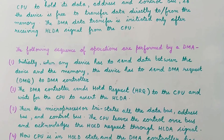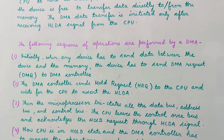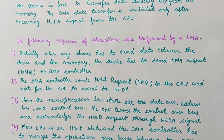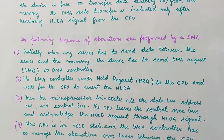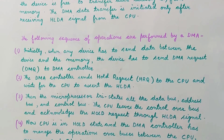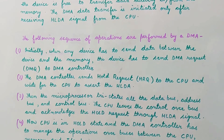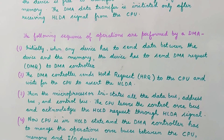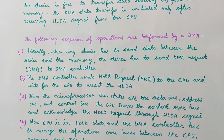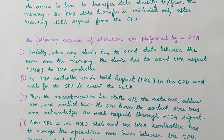When the DMA operation is done and data transfer is complete directly between memory and input/output, the CPU is free to perform the next job as the system buses are no longer needed by DMA. When the data transfer is complete, the DMA controller ends the request by sending a low signal to the hold pin.